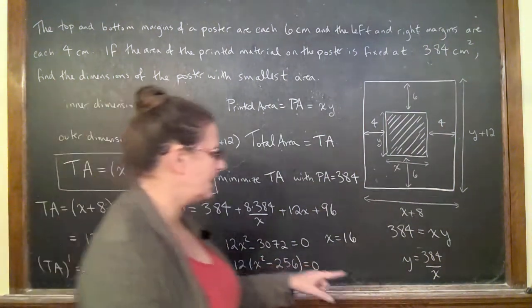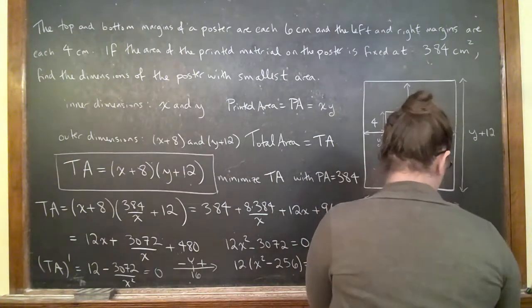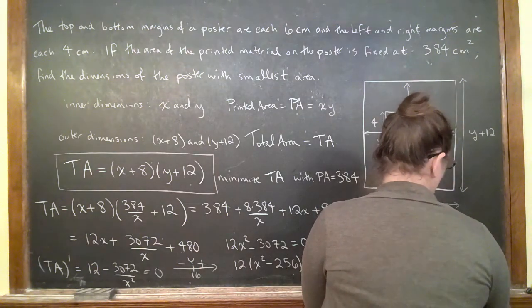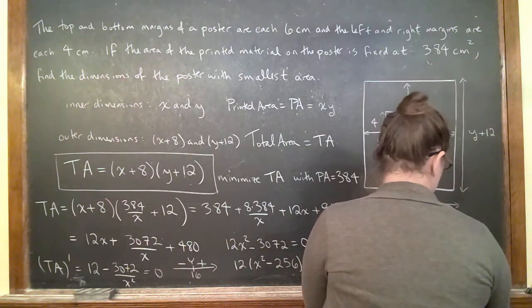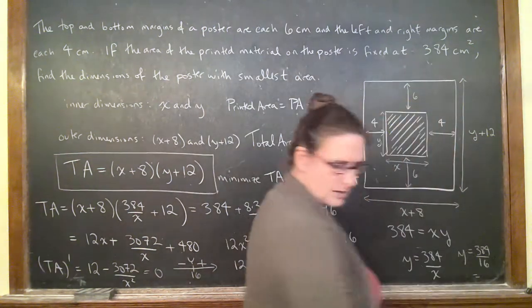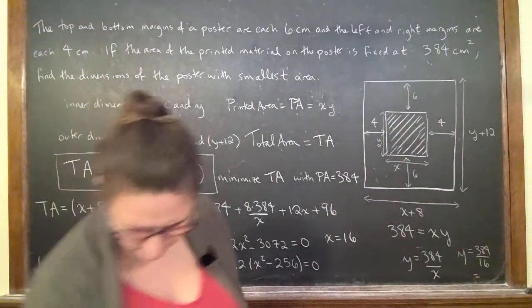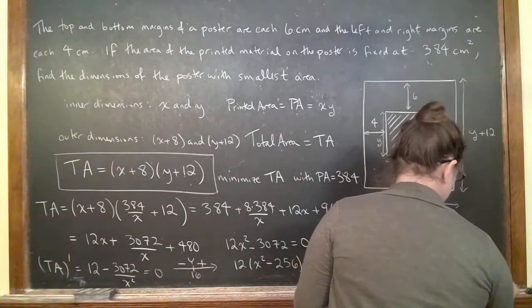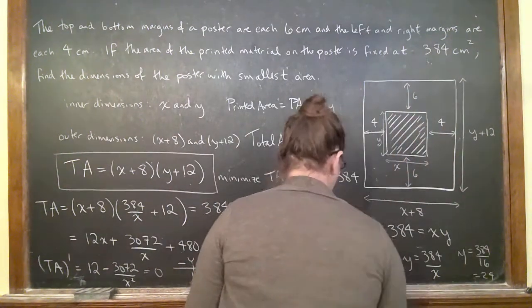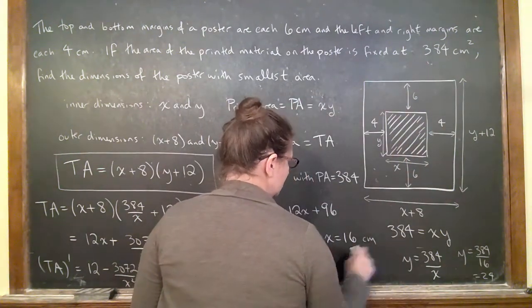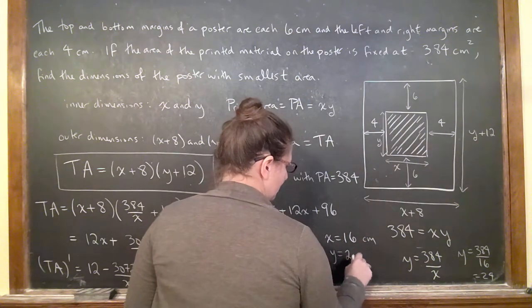Now if I go back to this and figure out what y has to be there, y equals 384 over 16, and that's 24. So x equals 16 centimeters and y equals 24 centimeters.